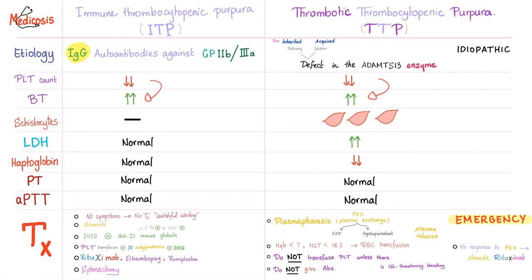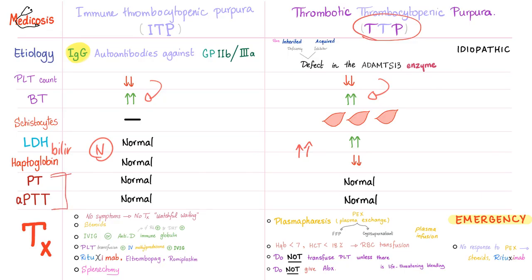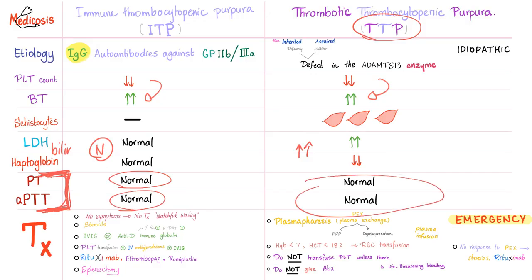Schistocytes are absent in ITP but present in TTP — that's a huge difference. LDH level in the serum is normal in ITP but high in TTP. Haptoglobin is normal in ITP but low in TTP because it has been consumed because of the hemolytic anemia. Bilirubin level in the plasma will be normal in ITP but high in TTP because of the hemolytic anemia. Since the problem is in primary hemostasis only, while secondary hemostasis is absolutely fine, PT and PTT will be normal in either case.